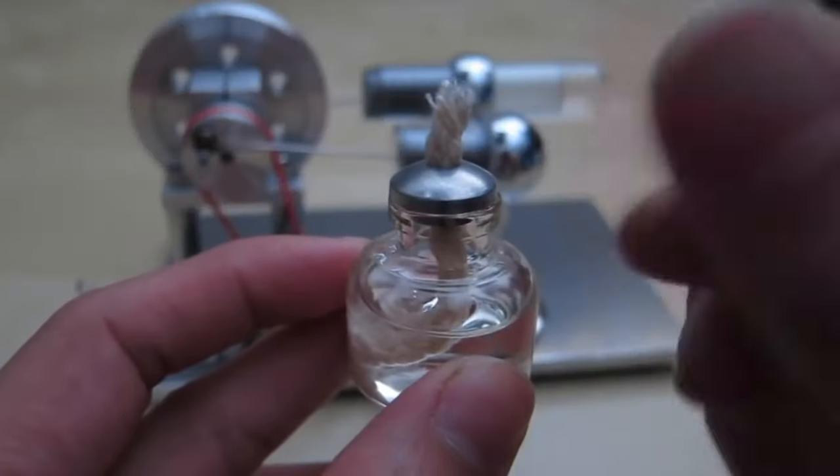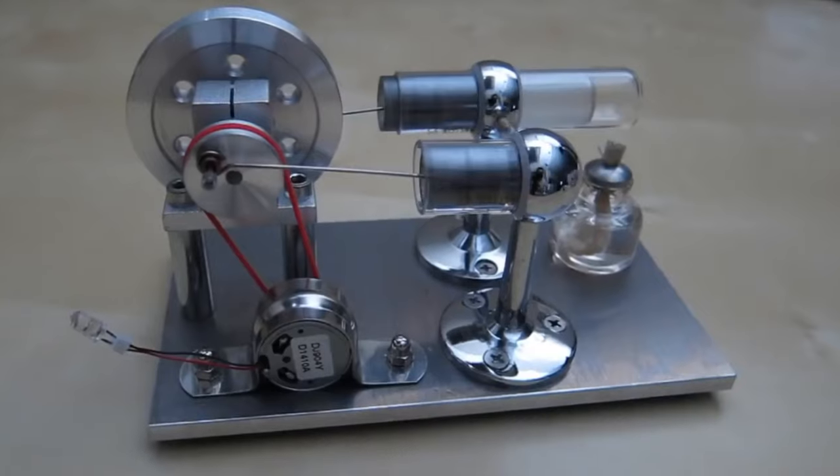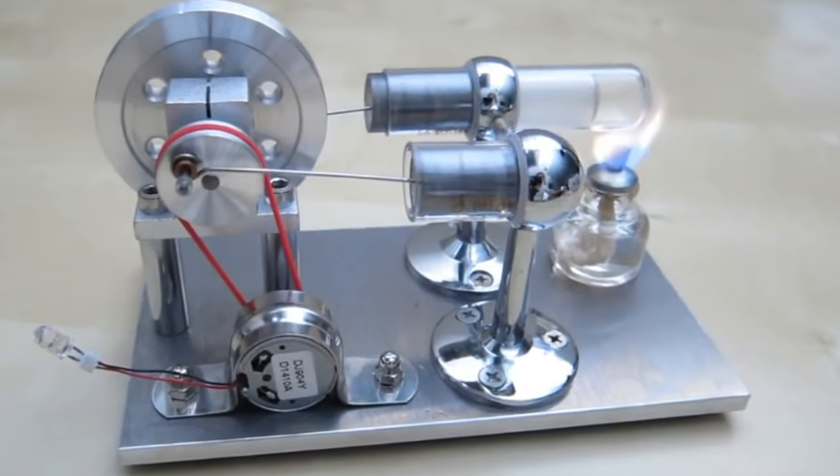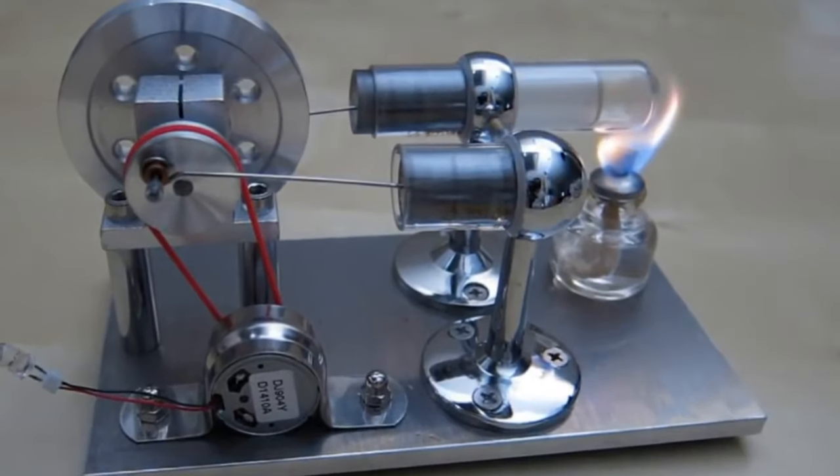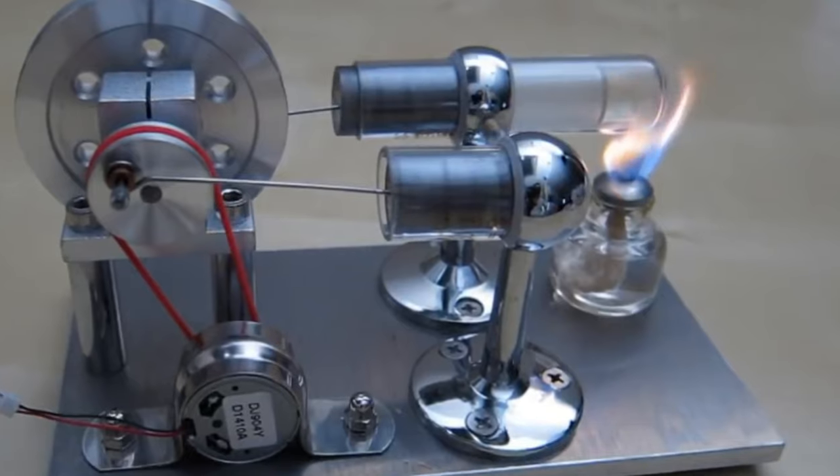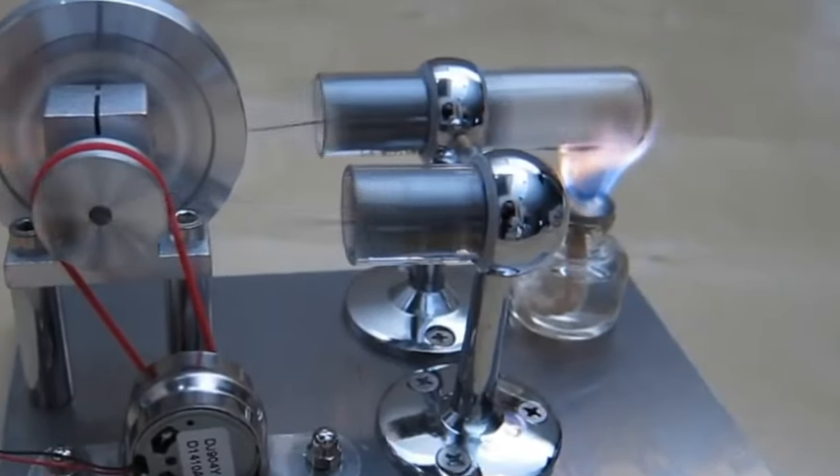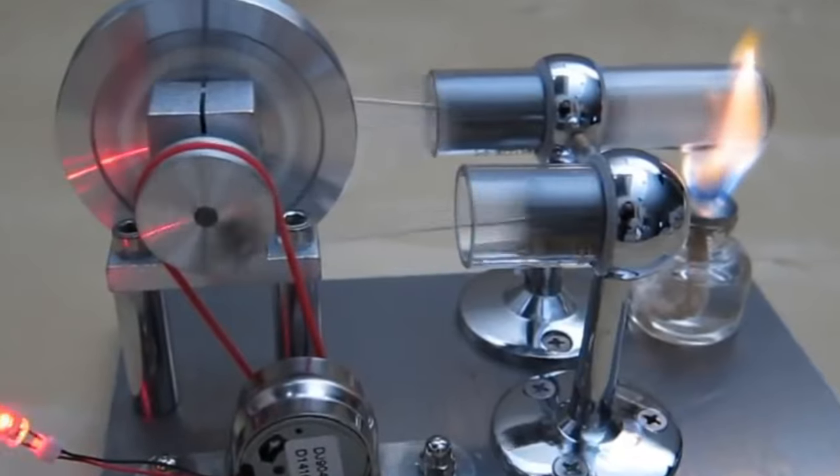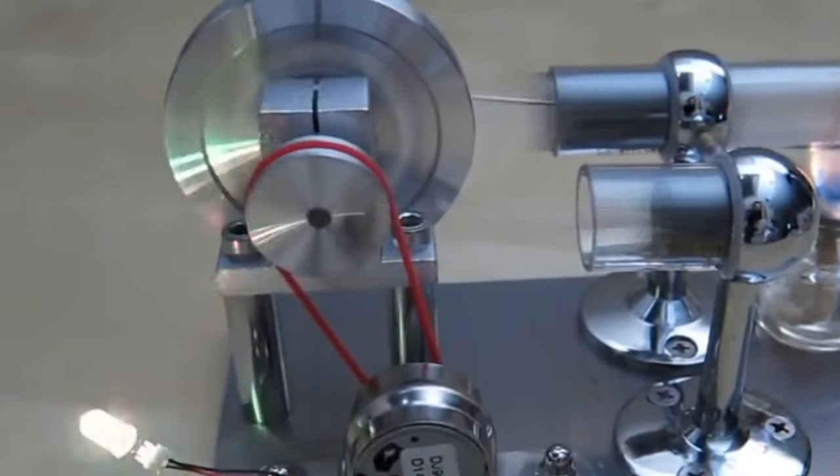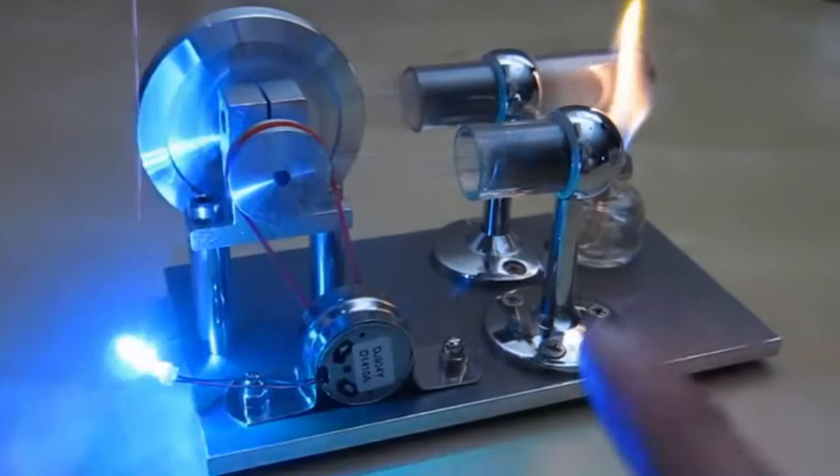Simply fill the alcohol burner with 95% alcohol, light it up, and let the round-ended cylinder burn for about 20 seconds. Then give the wheel a gentle push, and the engine will run like a charm. The engine's longevity and ease of operation make it a great learning tool for kids' science projects and physical or mechanical learning.